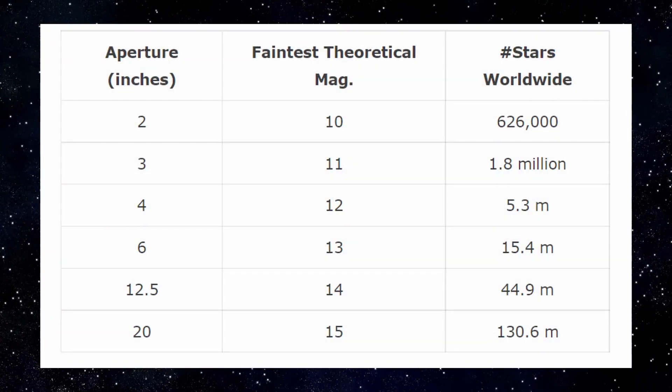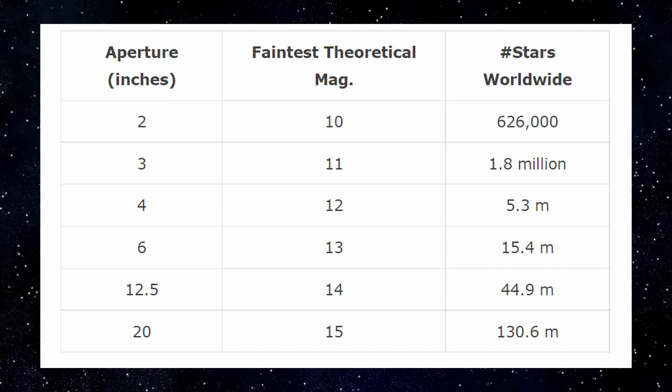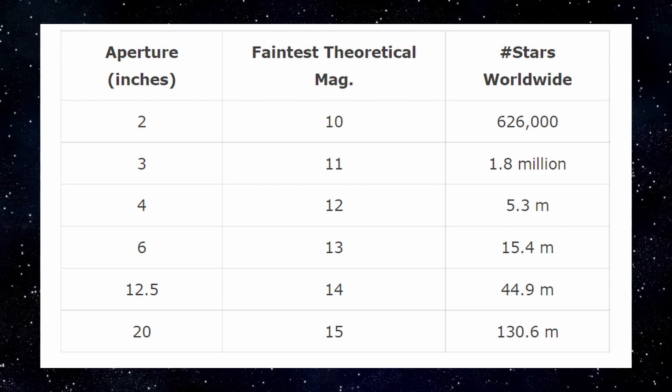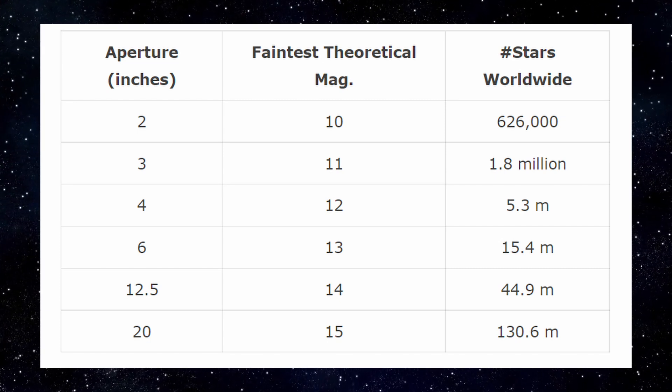This table shows estimates of the number of stars visible by using different aperture sizes. Numbers increase exponentially if we go in the opposite direction as there are far more faint stars than bright ones.